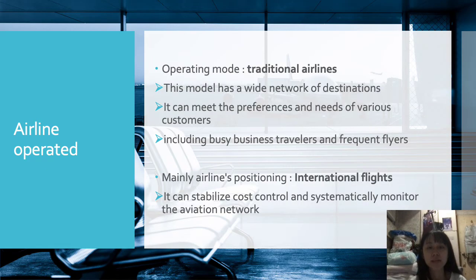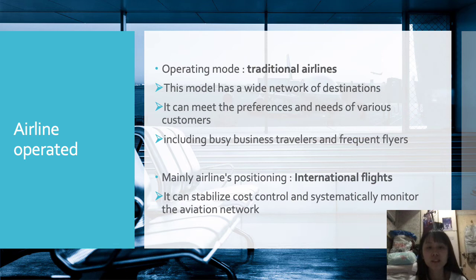Then let's move on to the next part. In terms of operating mode, in order to provide a better air experience, I use traditional airlines as the operating mode. This model has a wide network of destinations that can meet the preferences and needs of various customers, including busy business travelers and frequent flyers. My airline's positioning is mainly for international flights, which can stabilize cost control and systematically monitor the aviation network.